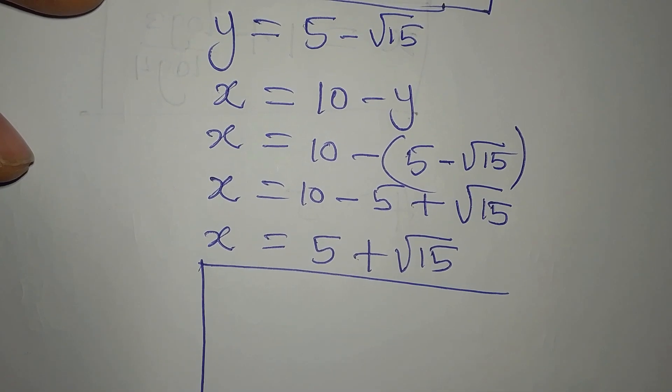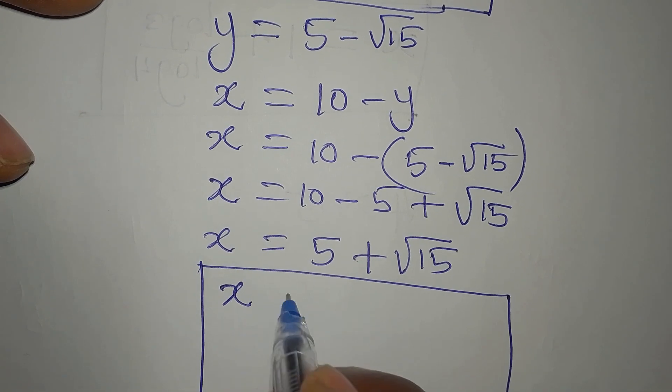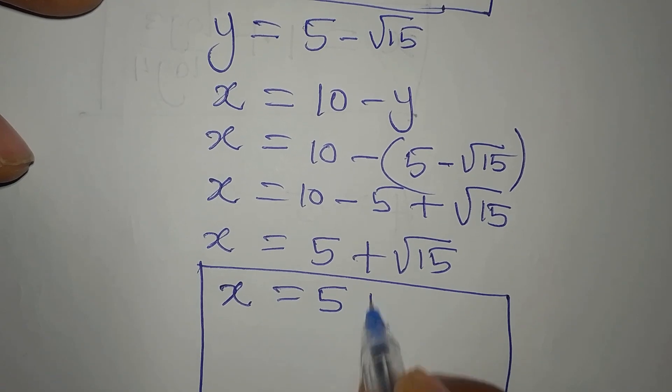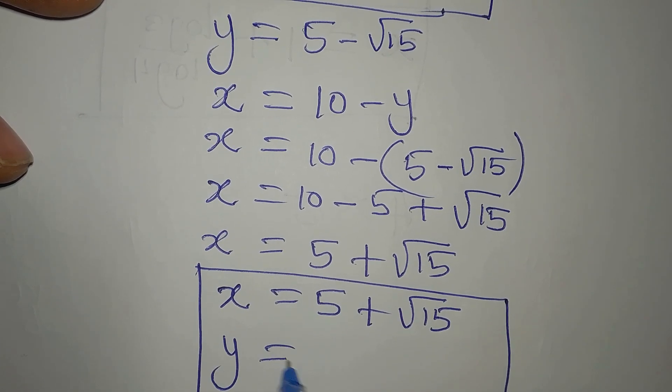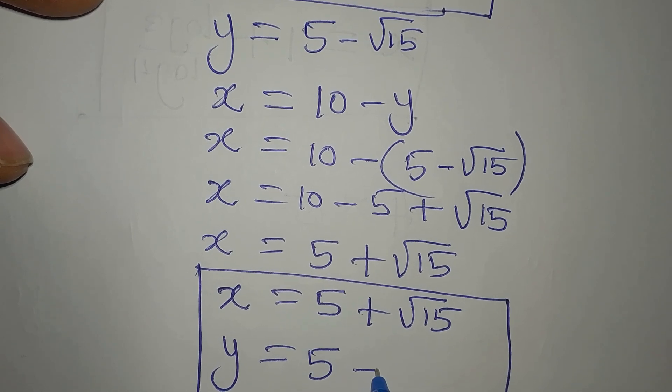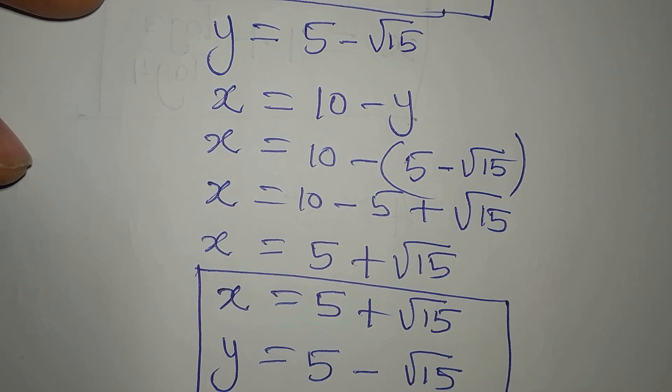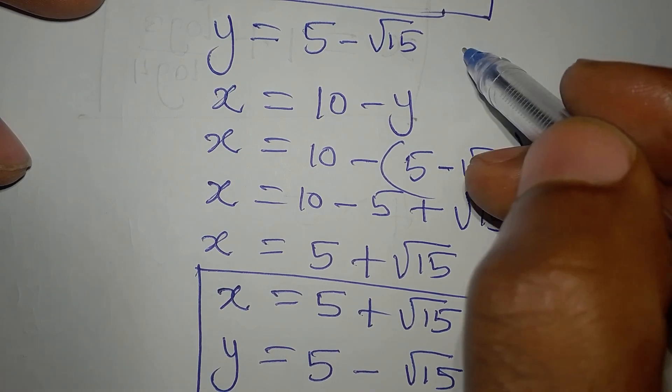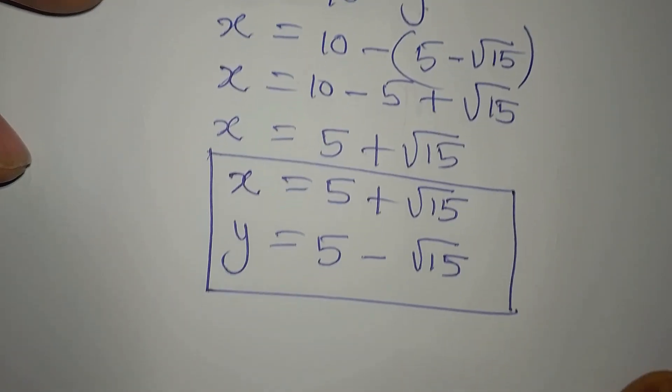So if we want to continue, that means we'll bring the other solutions together. So when X is equal to 5 plus root 15, our Y is equal to 5 minus root 15. Just like we have from there, you can take a look at that.